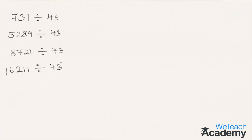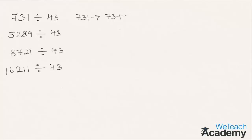Let us proceed with a few more numbers. The first is 731. According to the concept, adding 13 times the last digit (1 times 13 is 13) to the remaining number 73, we get 73 plus 13, which equals 86. Since 86 is 43 times 2, 731 is exactly divisible by 43.